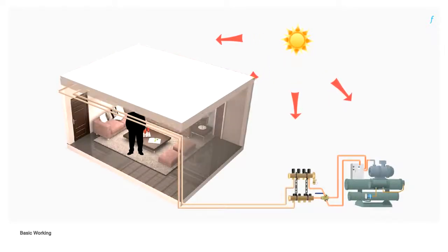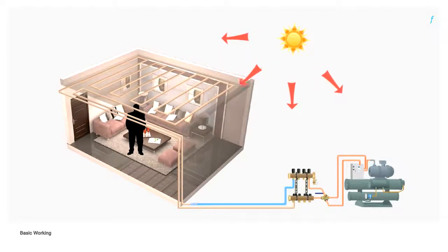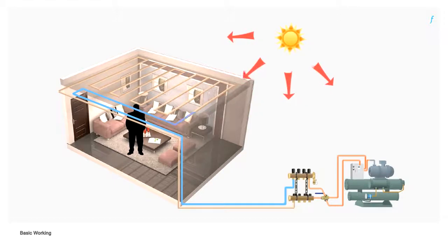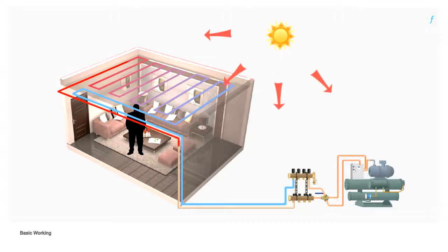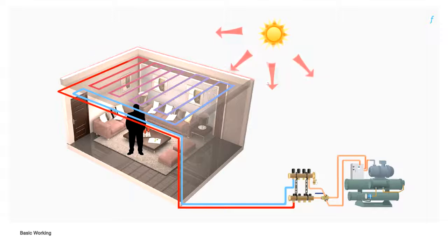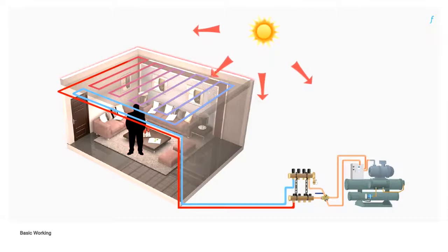Chilled water from the chiller goes to the manifolds and is distributed through the grid of pipes installed in the room. The chilled water in the pipes then absorbs heat from the ceiling or the floor, making it cooler than the objects and the occupants in the room. The resultant temperature difference ensures that heat from the bodies is now radiated towards the cooler building components, leading to a sensation of thermal comfort.